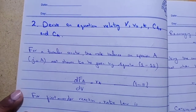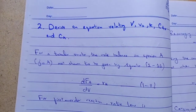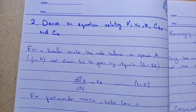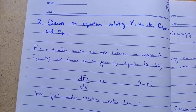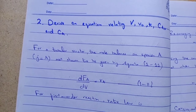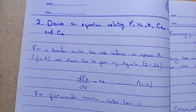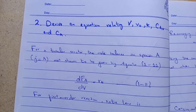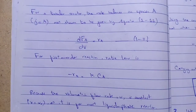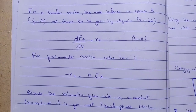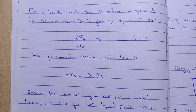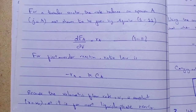The next question asks us to derive an equation relating V, V naught, K, CA naught, and CA. For the tubular reactor, the design equation we derived previously is: dFA over dV equals rA. The rate law for this first order reaction gives us: minus rA equals K times CA.